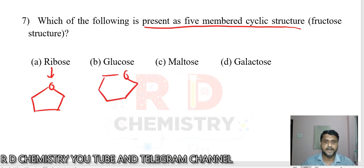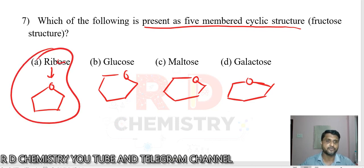DNA, RNA you have studied as a five-membered ring. Glucose is a six-membered ring. Maltose is a combination of two monosaccharides. Galactose is also a six-membered ring. These are six-membered rings and ribose is a five-membered ring. So ribose is the answer.